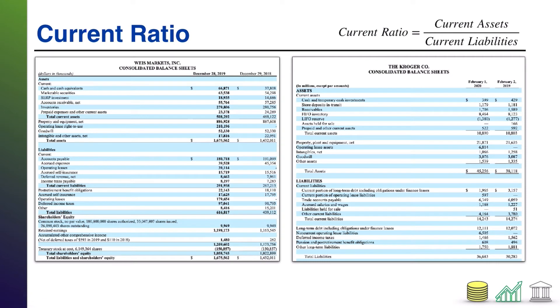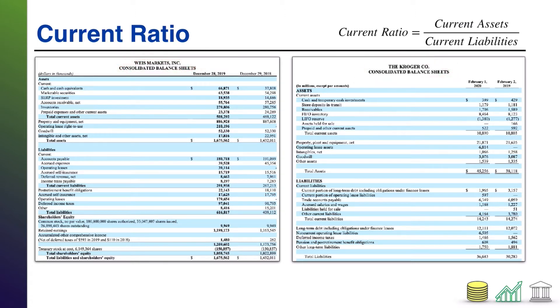Here I have my balance sheets for two separate companies. I have over here Weiss Markets, Inc. and over here Kroger Company. We are going to calculate the current ratio for these companies.